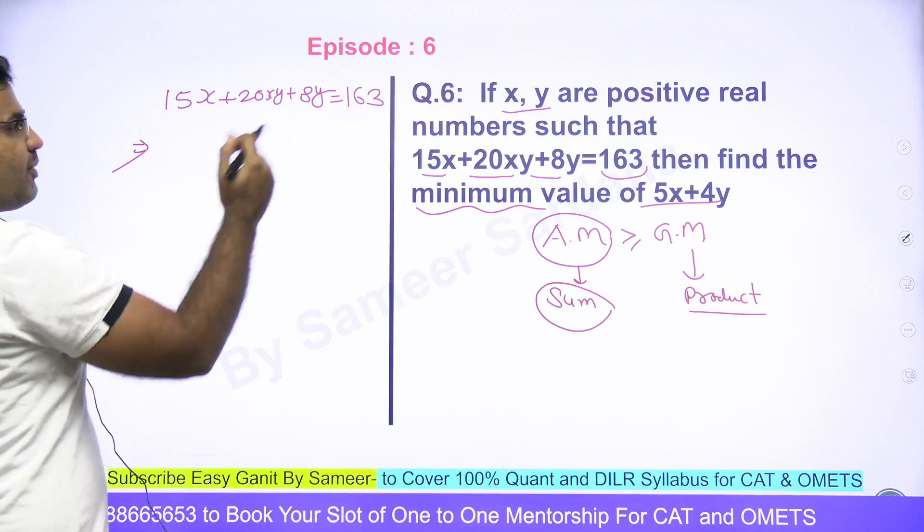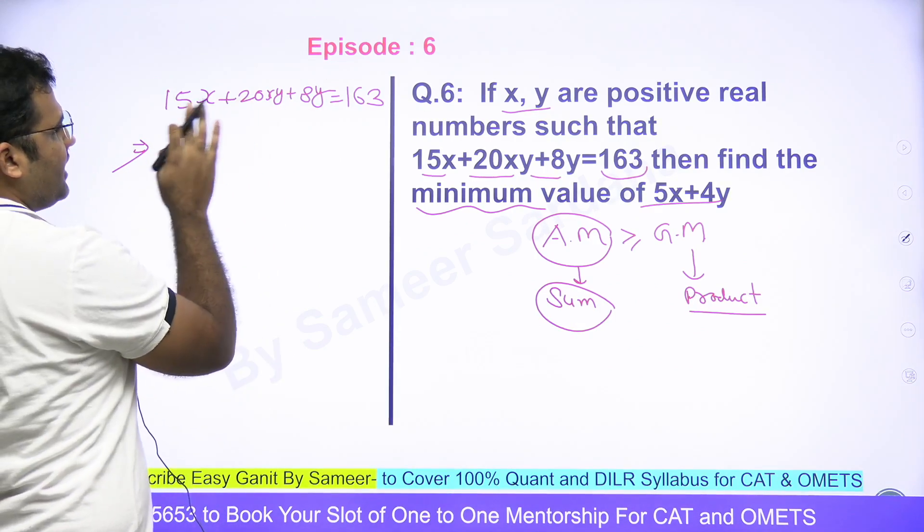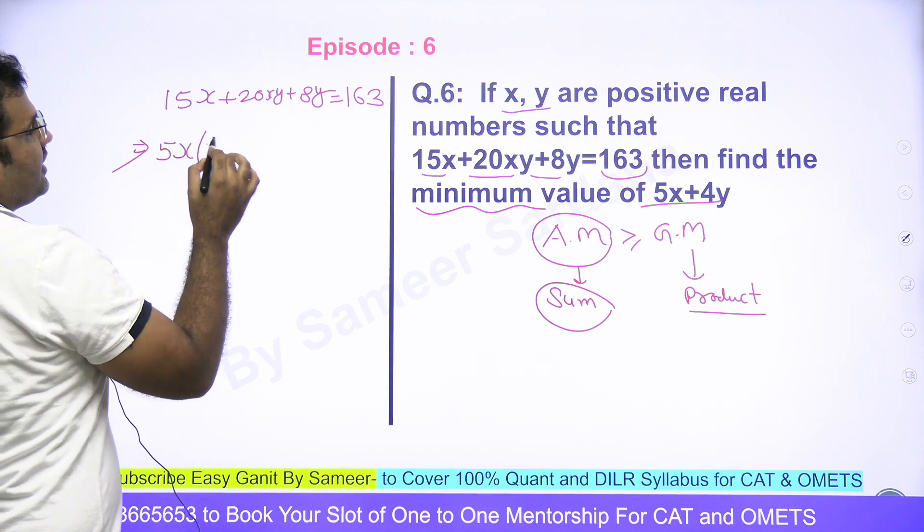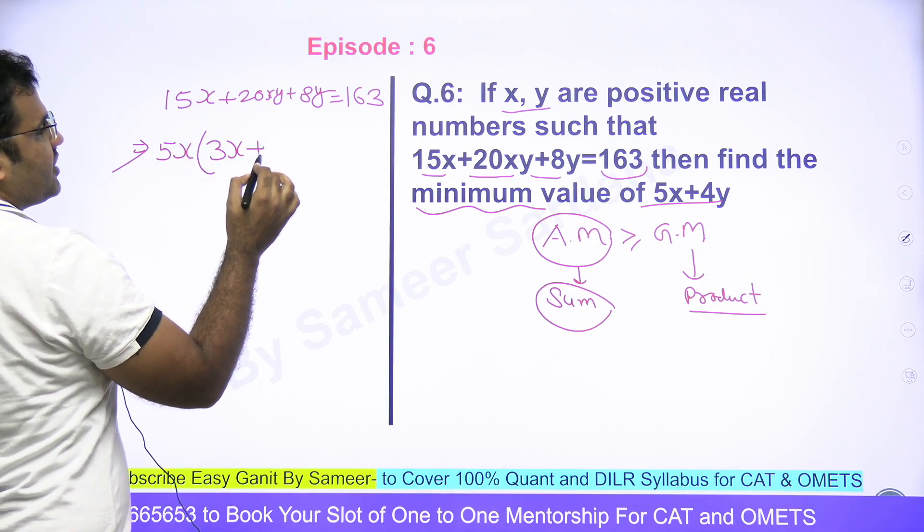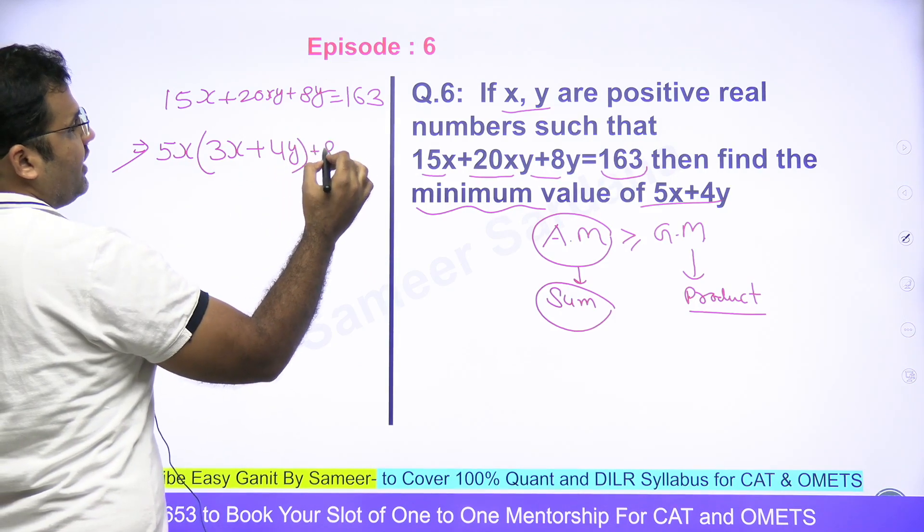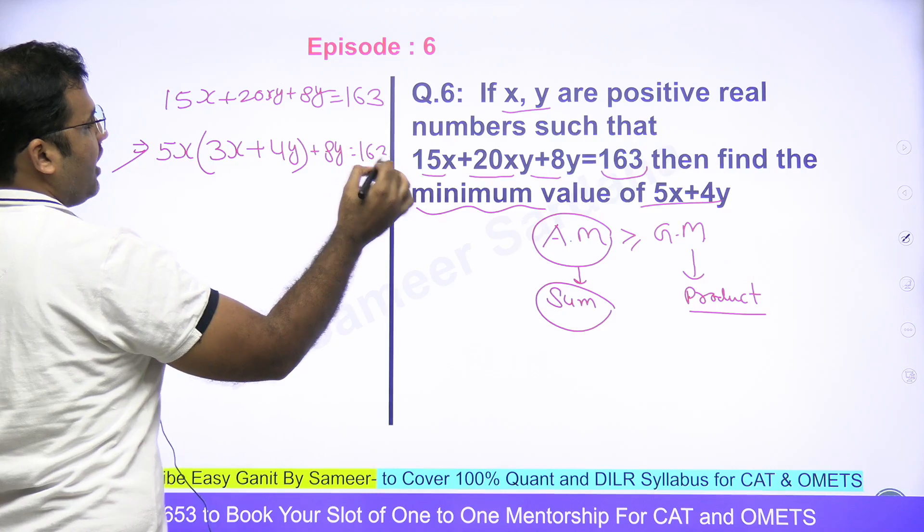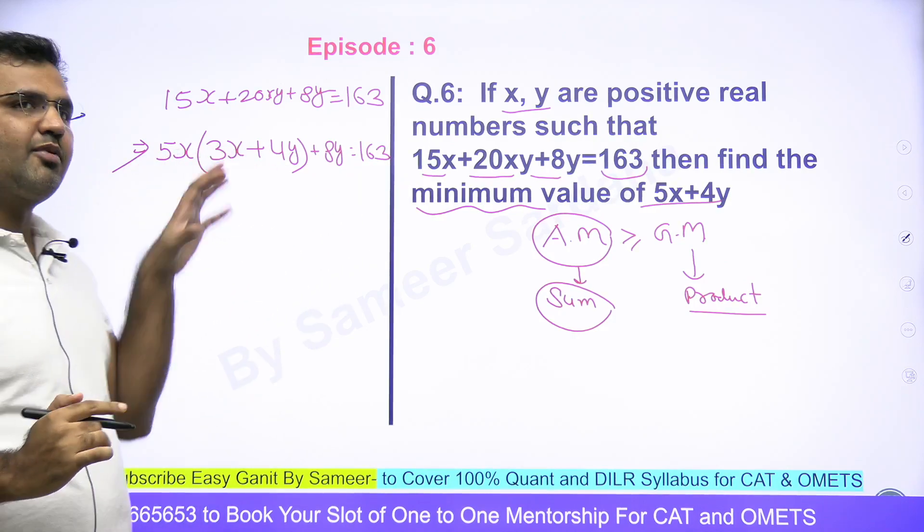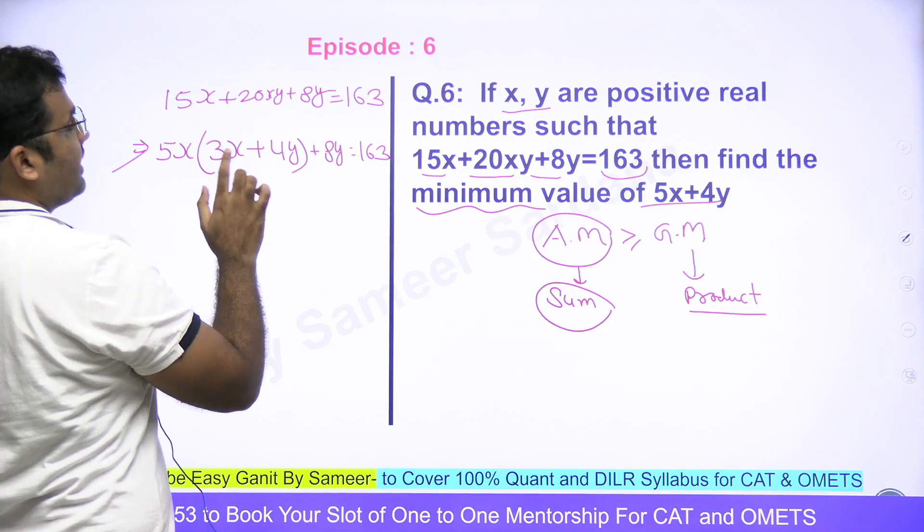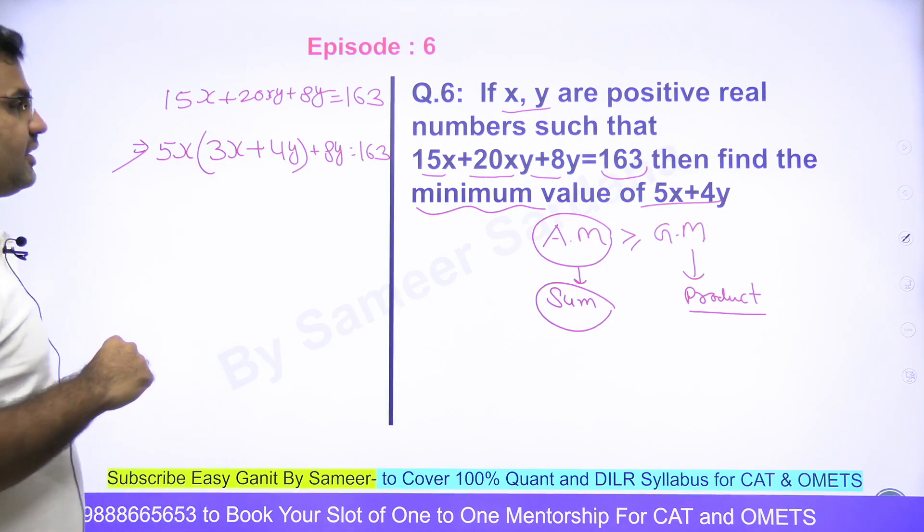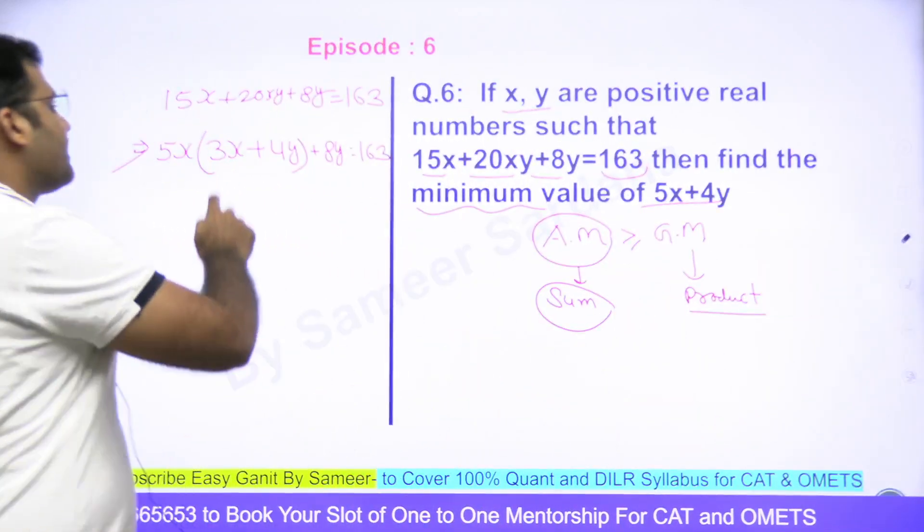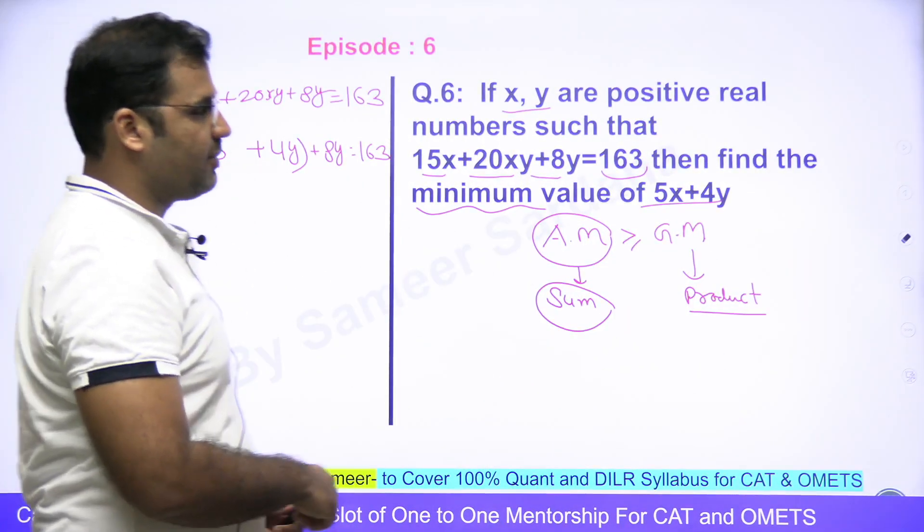Kaafi jagha questions is pe aaya hua hai. So guys, ye equation ko product form me kaise convert kare? Simple si baat hai, isme common le lo. You see that 5x is common here. So I'll be having this expression 5x(3+4y)+8y=163. Now, if I want to convert this into a product form, I need another bracket with 3x+4y. Because aapne 5x ko common liya, so andar 3 aayega. So 3+4y.